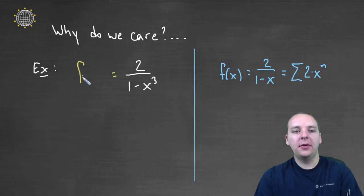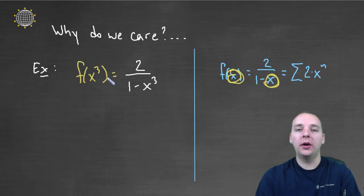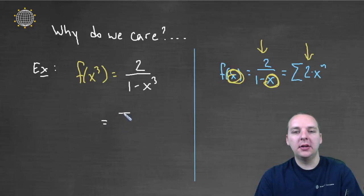This isn't f evaluated at x. This is f evaluated at x³, right? Because you notice instead of an x, I've got an x³ where x used to be. So how do we do this knowing that this is the power series representation of this function? We're going to use this as a model and we do the following. We would write this as the sum from n equals zero to infinity